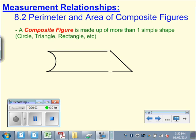Hello, this is Measurement Relationships 8.2 Perimeter and Area of Composite Figures. Now a composite figure is made up of more than one simple shape. Simple shapes are circles, triangles, rectangles - shapes that we can get the perimeter and area fairly easily, things that we are very familiar with. A composite figure actually combines them together to make a more complex shape, but still essentially made of these regular shapes.